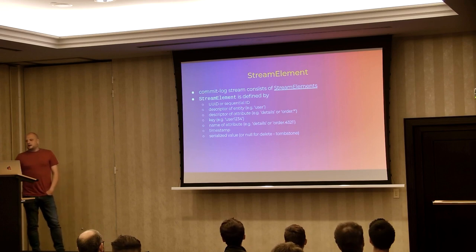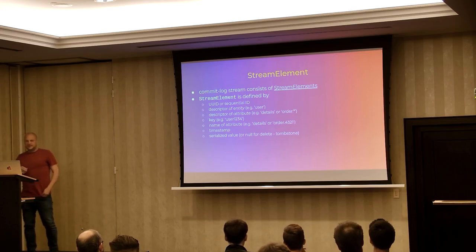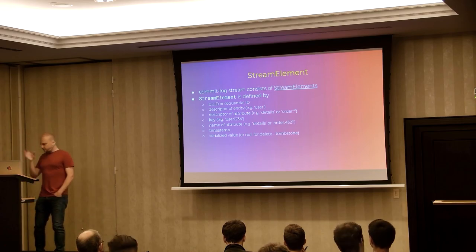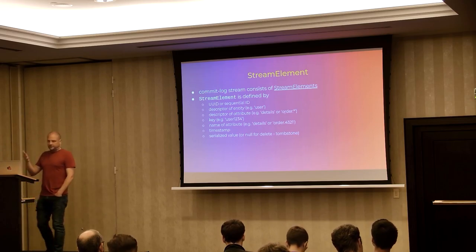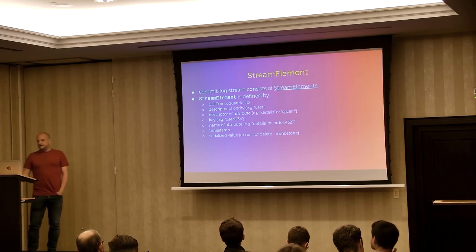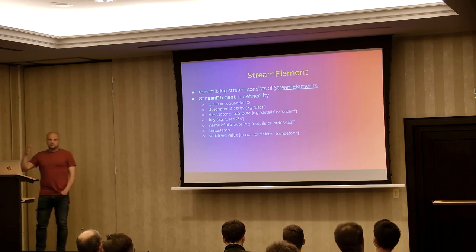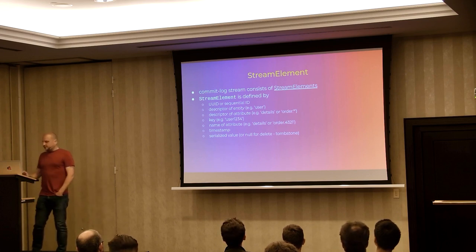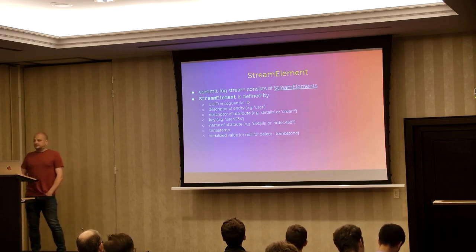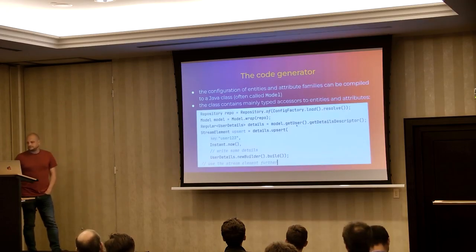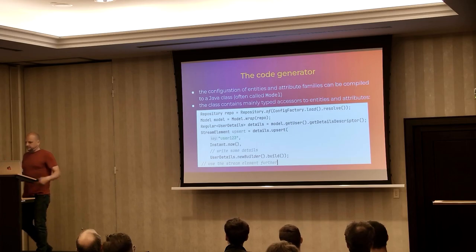The data model is described by entities and attributes, and each update or delete of any attribute in the system is described by something the platform calls a stream element. It has a UID for deduplication, a descriptor of the entity, a descriptor of the attribute containing all information about the attribute — like how to serialize the data — the key, the attribute name such as 'details' or 'order', a timestamp, and the value or null if it is a tombstone.